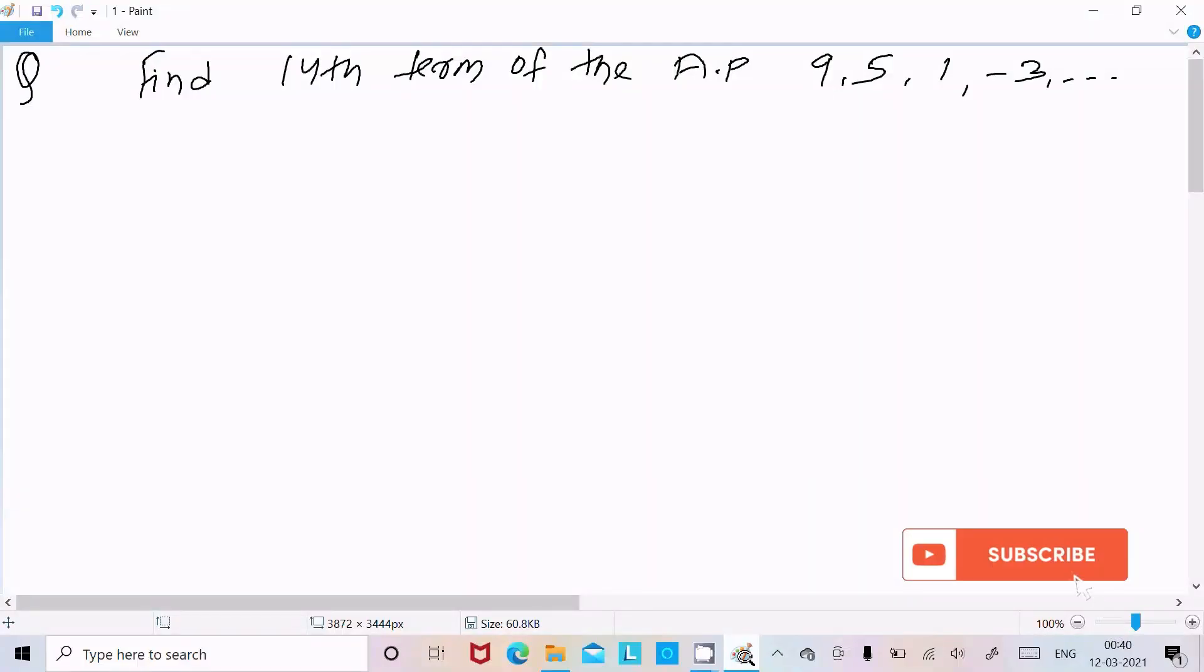Hello friends, in this video lecture I am going to find the 14th term of the AP. The AP is 9, 5, 1, -3, and so on. AP stands for Arithmetic Progression. Let's see the answer.